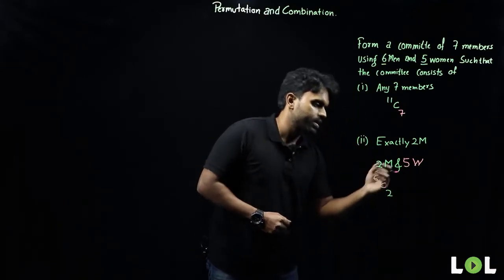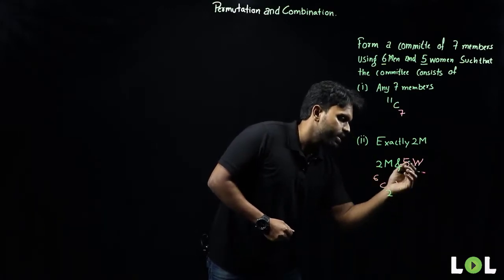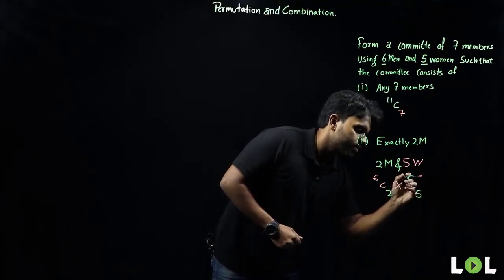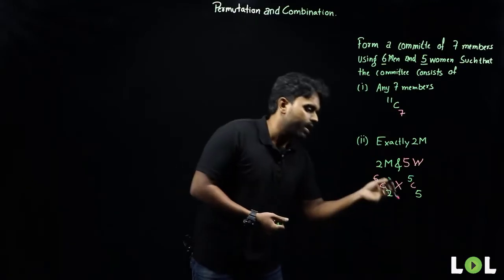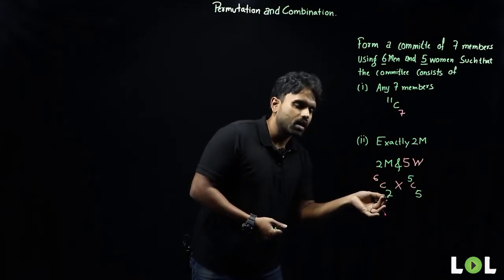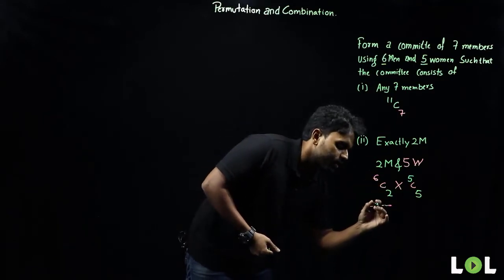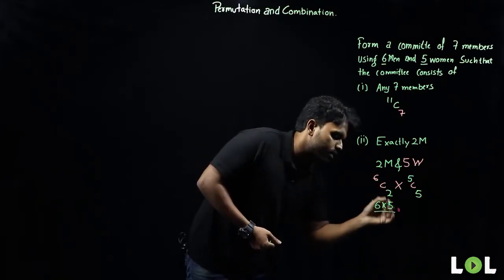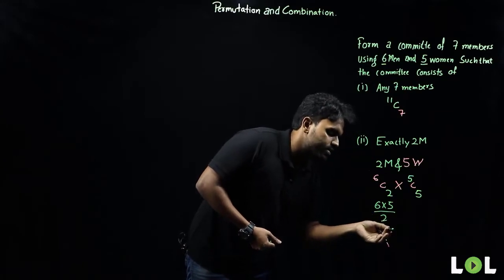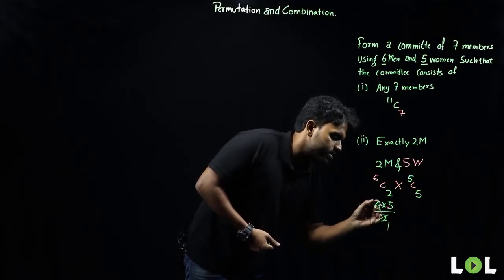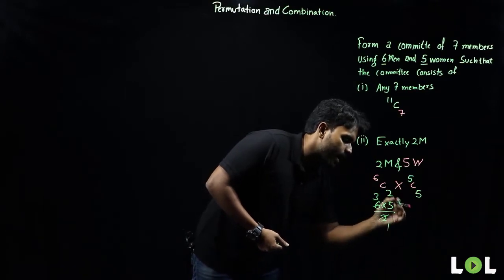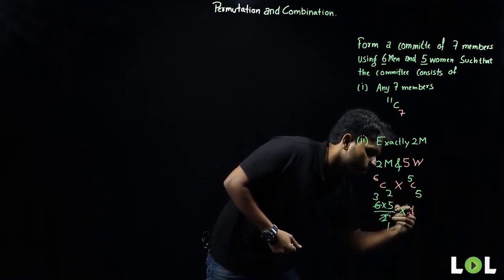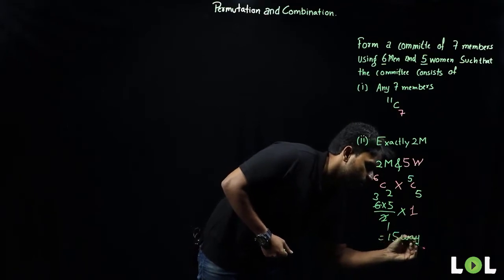So the calculation is 6C2 and 5C5. Using n! / [(n−r)! × r!]: 6C2 = (6×5) / (4! struck off, leaving 2!) = 30/2 = 15. And 5C5 = nCn = 1. So there are 15 different ways the committee can be formed with exactly two men.